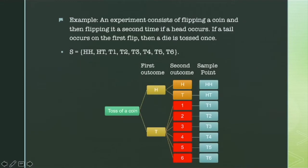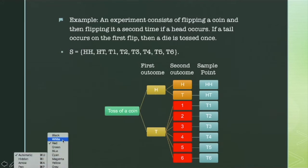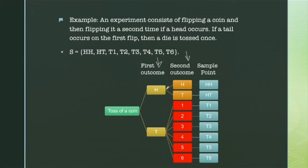Here is a slightly more complex experiment. The experiment consists of flipping a coin and then looking at the result. Before going for the second step, we check if head appears — if so, we toss the coin again. But in case tails appear, we toss a dice instead. So there are two outcomes in this experiment: either head or tail on the first flip, and the second outcome depends upon the first. The sample space has eight possible outcomes.